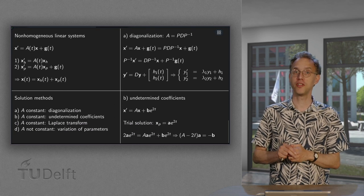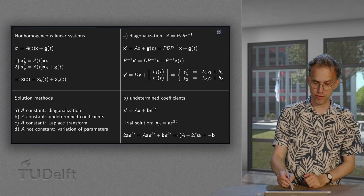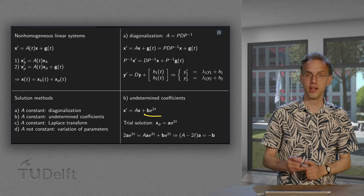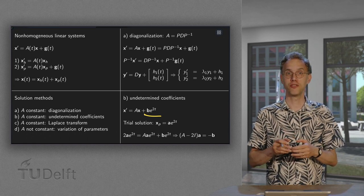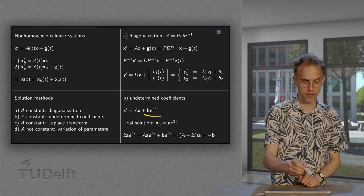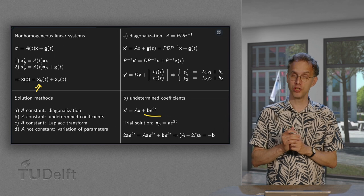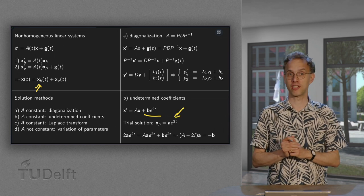Let's look at the undetermined coefficients. We'll do a very fast example. If you have something of the following form, so if your vector g of t is of the form b times e to the power 2t, what you can do is first solve the homogeneous problem. So find your homogeneous solution.